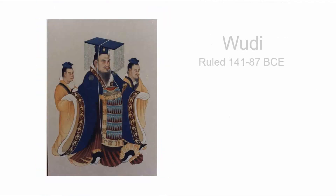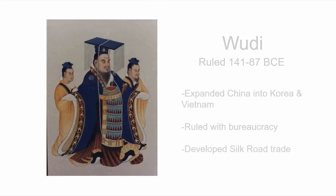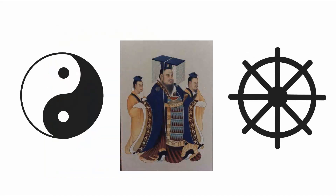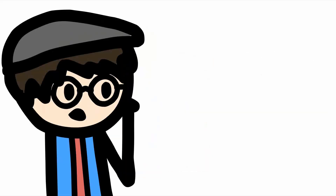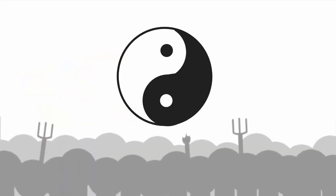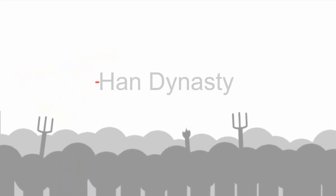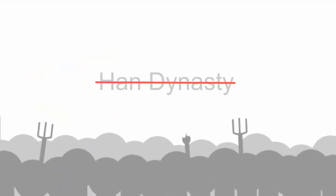After him was Wu Di, who started ruling in 141 BCE. He expanded China into Korea and Vietnam. He ruled with bureaucracy and helped to develop the Silk Road trade, which introduced Daoism and Buddhism into China. The introduction of Daoism didn't turn out the greatest for them, because Daoism led to rebellion, which led to chaos in the royal court, which led to the dynasty ending in 220 CE.